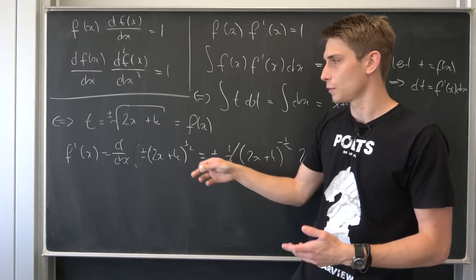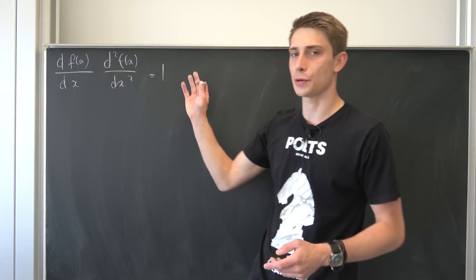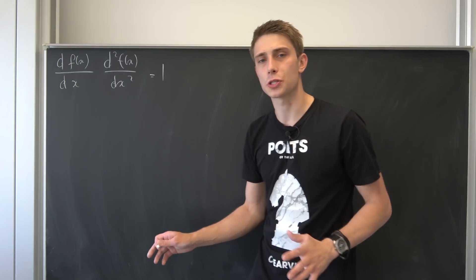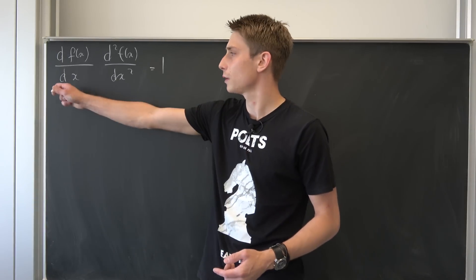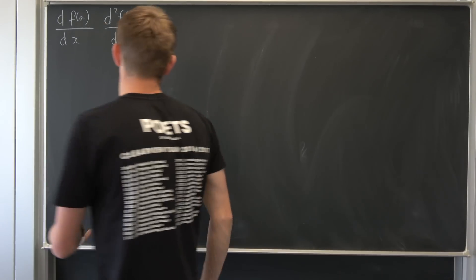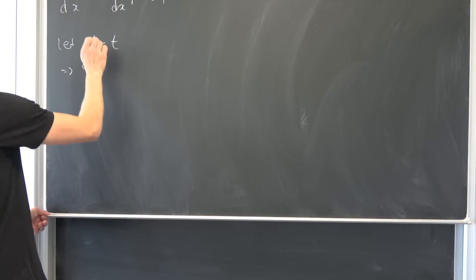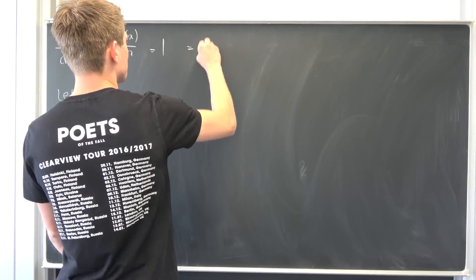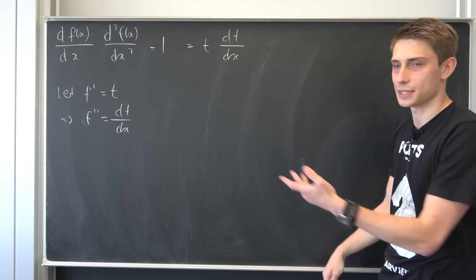Now for the second one — maybe the functions are equal, let's just solve it. The next one isn't quite as straightforward because we are dealing with a nonlinear second-order differential equation. We can do some math magic: let f'(x) equal a new function t of x. That means f''(x) equals dt/dx. Plugging this in, we get t times dt/dx equals 1.